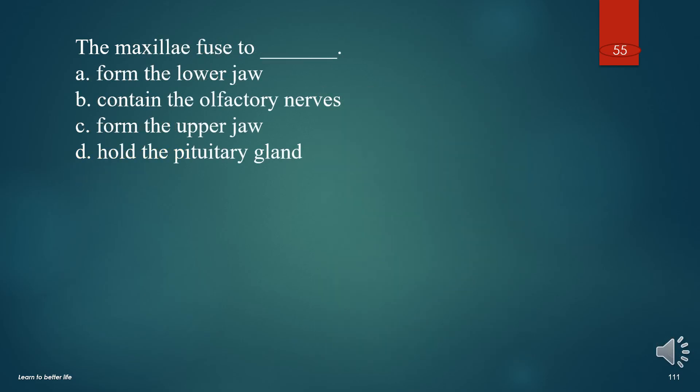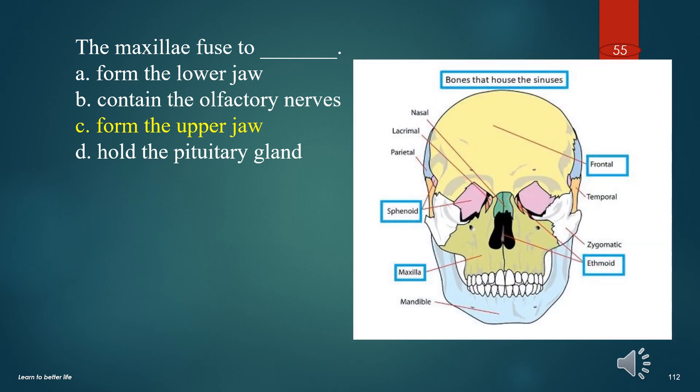The maxillae fused to what? A. Form the lower jaw. B. Contain the olfactory nerves. C. Form the upper jaw. D. Hold the pituitary gland. The answer is C. Form the upper jaw.